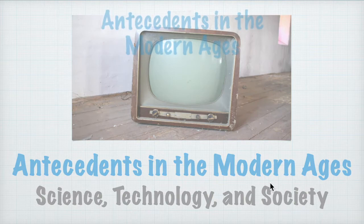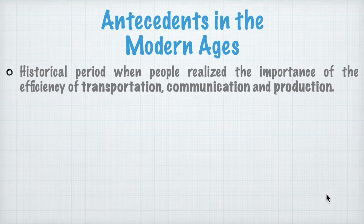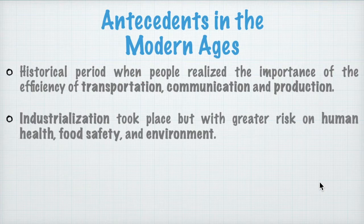In this modern ages, this is where the historical period went — people realized the importance of transportation, communication, and production, and this is where industrialization took place. But with this industrialization, there are greater risks on human health, food safety, and this is the start of where the damaging of our environment because of factories and such.